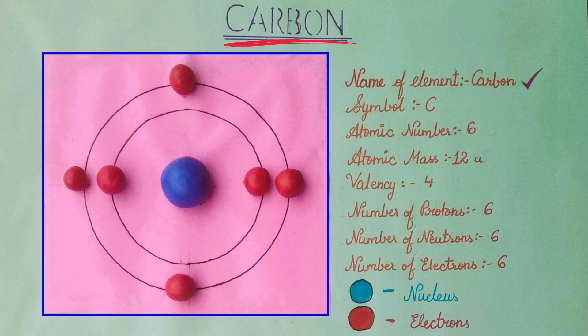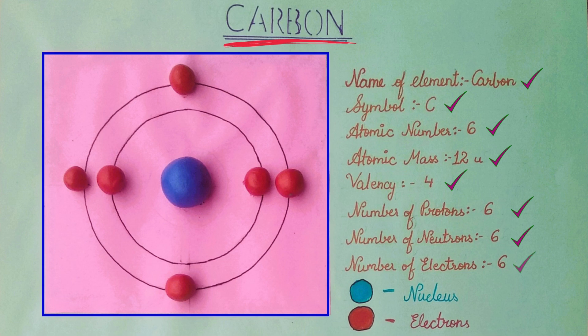Name of element: Carbon. Symbol: C. Atomic number: 6. Atomic mass: 12u. Valency: 4. Number of Protons: 6. Number of Neutrons: 6. Number of Electrons: 6.